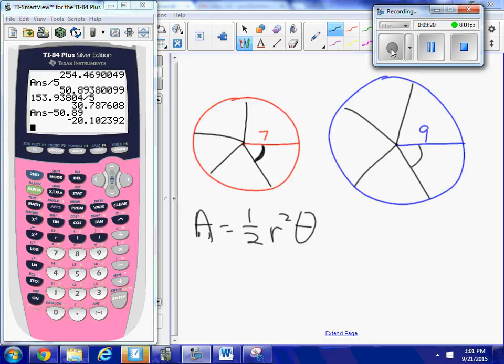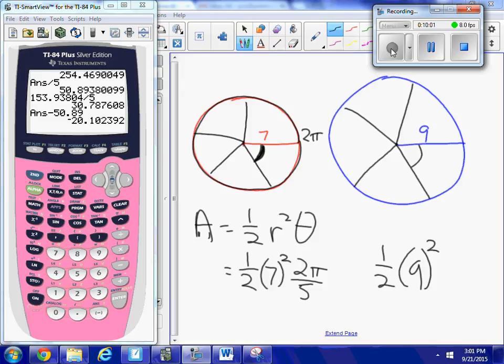If all the way around the circle has an angle of 2π, that would be our theta for all the way around the circle. Just this one piece of it is going to be 2π divided by 5. So the area of my seven-inch pizza here, one slice is one-half times 7² times theta, which is 2π over 5. Over here, the area is going to be one-half times 9² times 2π over 5. Same theta, the same angle. It's still one-fifth of the pizza.